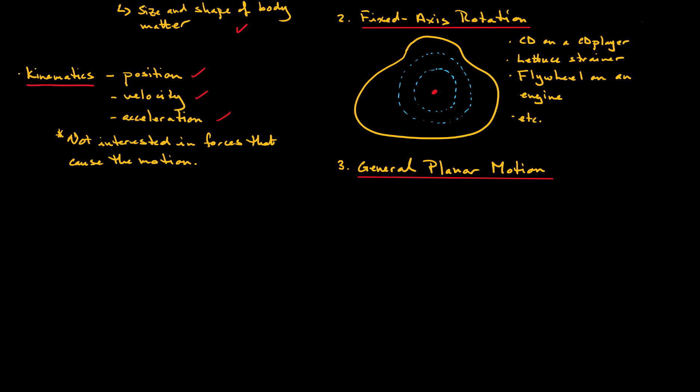The third planar motion that we're going to look at is general planar motion. And this is characterized by the following: it is any planar motion that is neither only translation or fixed axis rotation. Okay, so what we're saying is that it's a combination of the two.